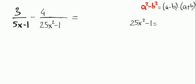25 is the square of 5, so it will be 5 squared times x squared. And here minus 1, which can be written as 1 squared.